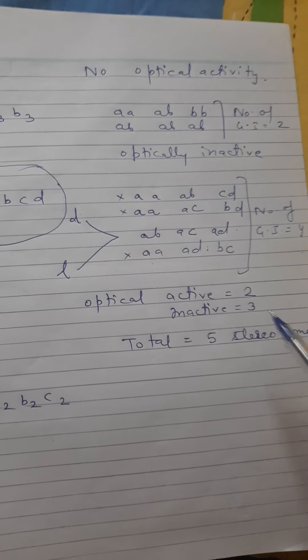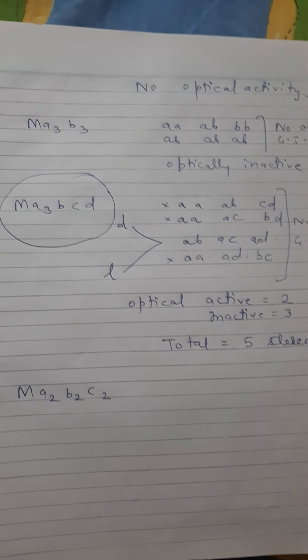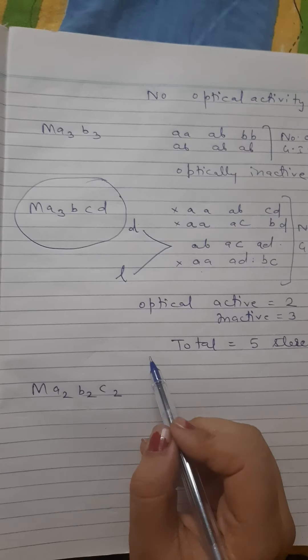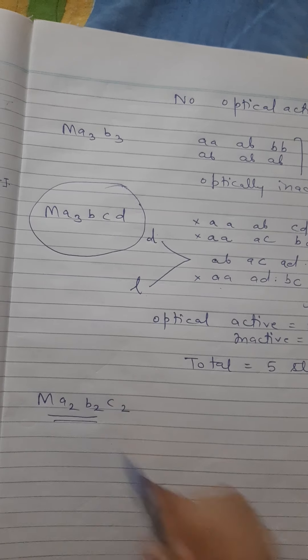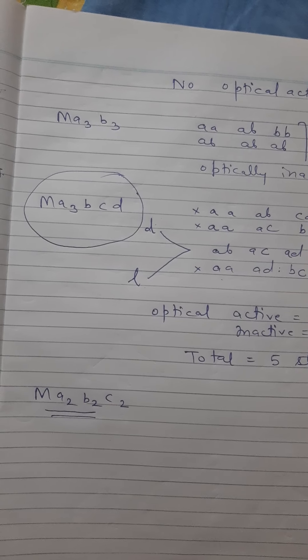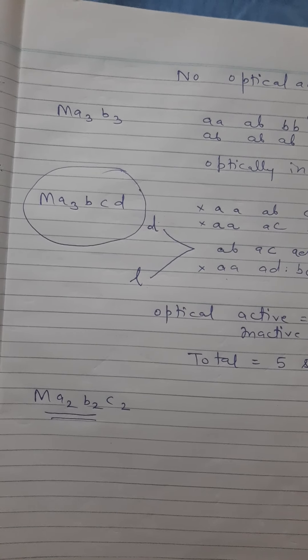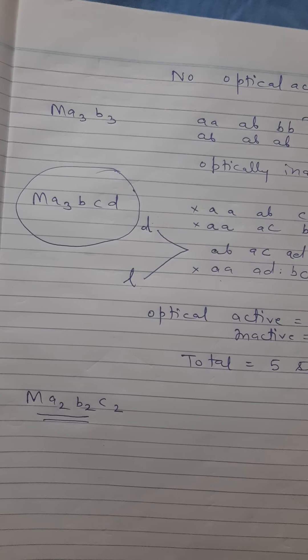Now your task is you have to find out the number of optical active and inactive isomers for this compound. You can comment in my video. If you find this video helpful, please like, share, and subscribe to my channel. Thank you for watching.